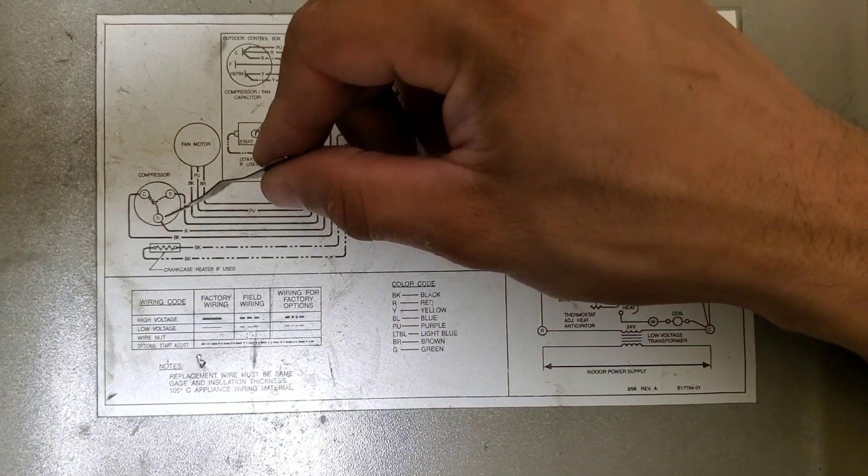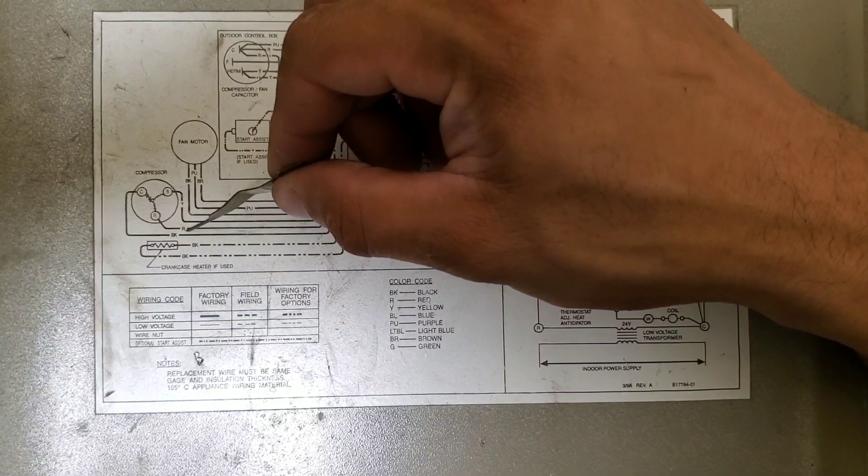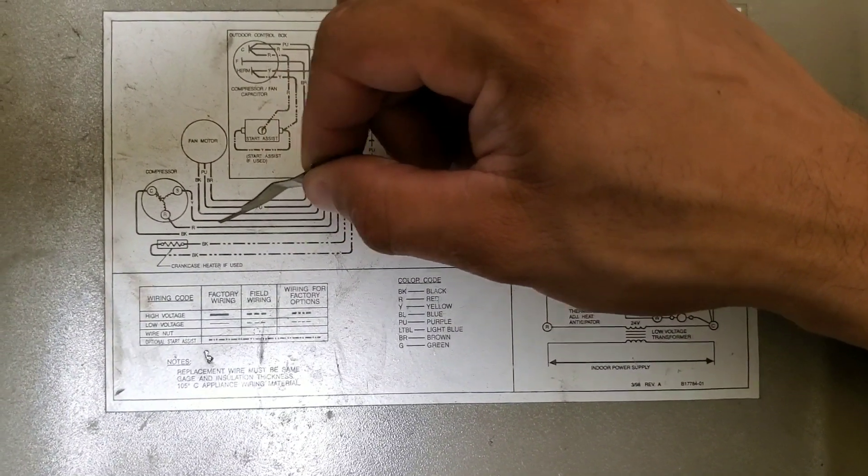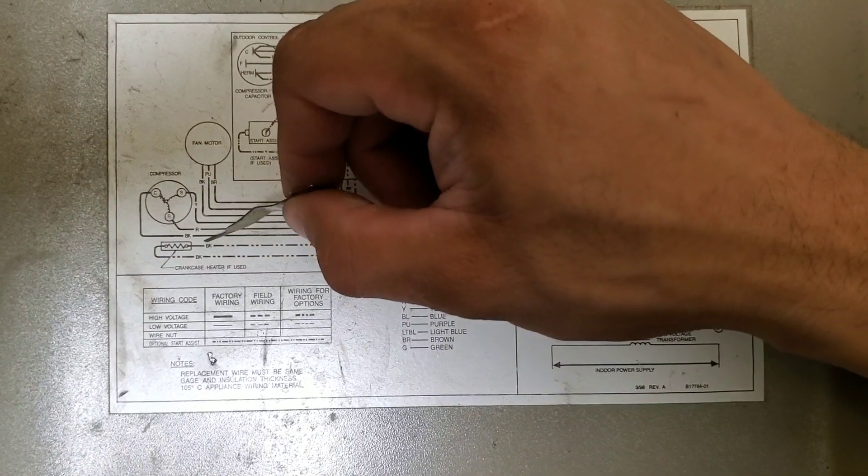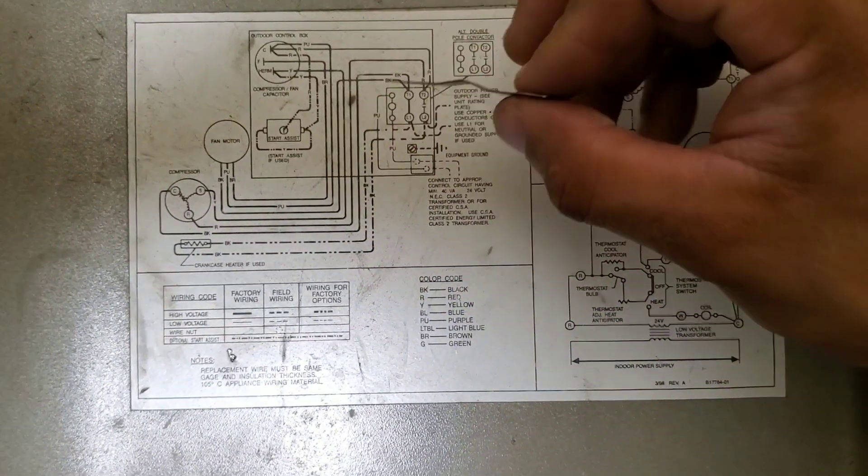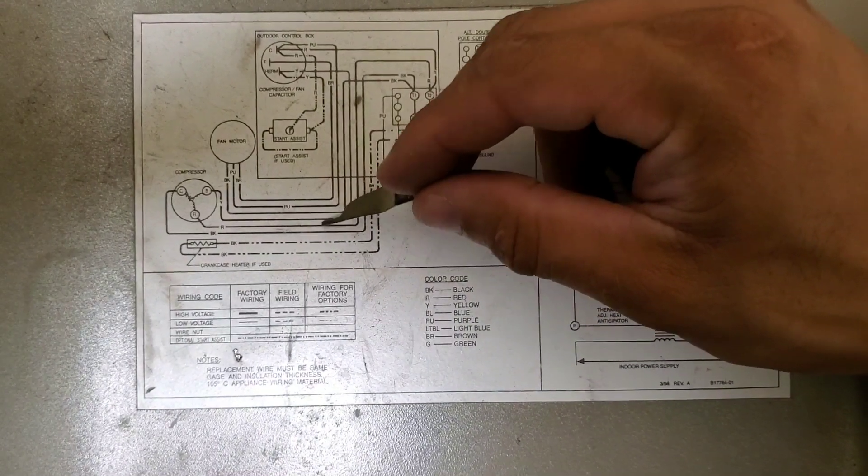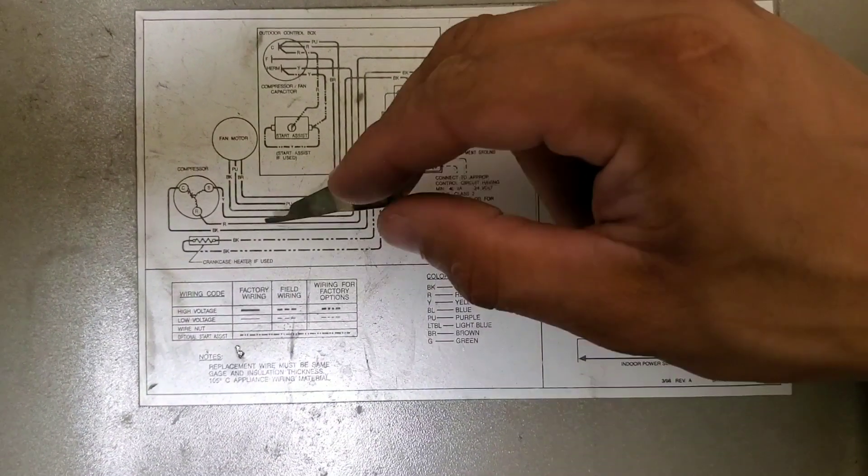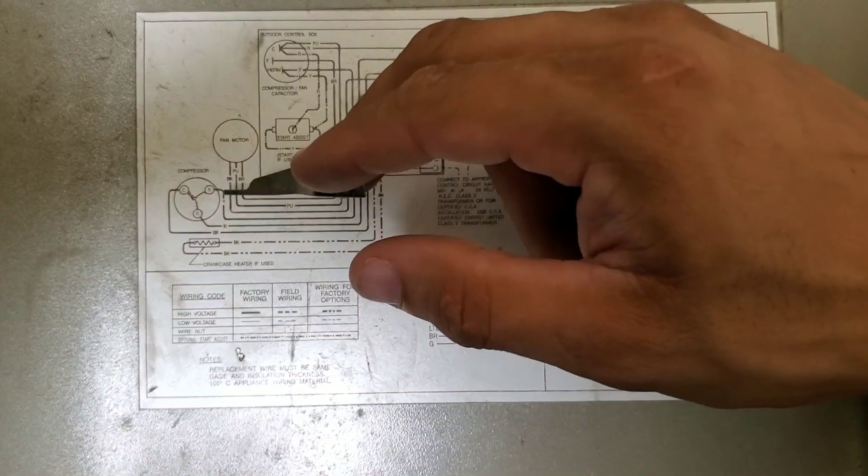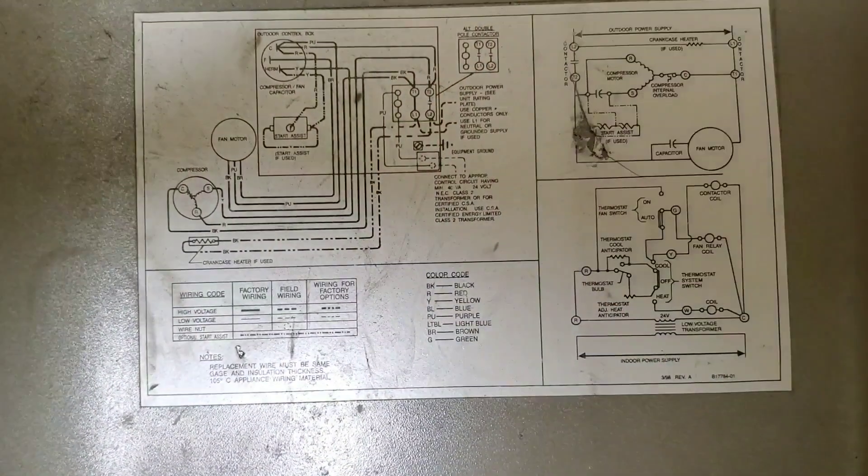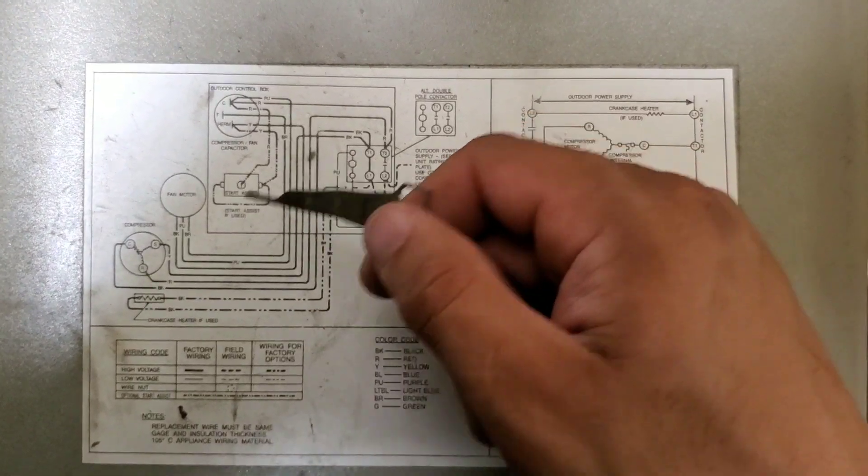You'll see here off the start from the compressor it's labeled Y, the run is R which is red, and the common is black. But a lot of times, especially when you're putting in a new compressor, the harness on the wires that feed to the new compressor, the colors are different.